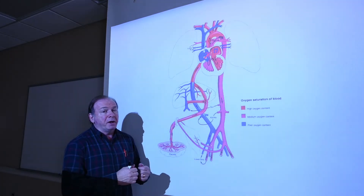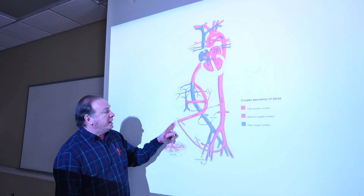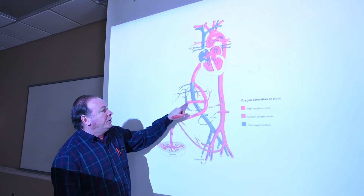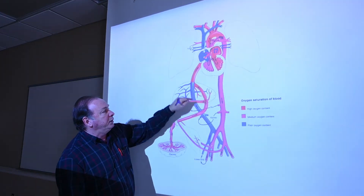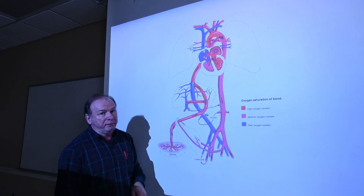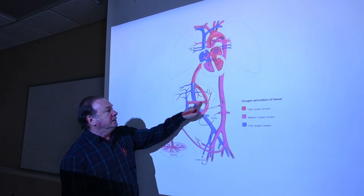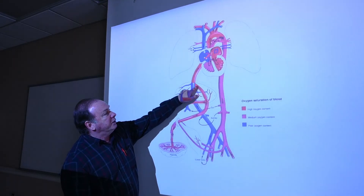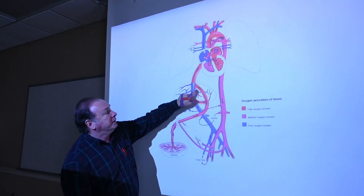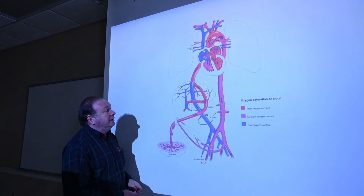Now let's look specifically at where mixing of oxygenated and deoxygenated blood occurs. Fully oxygenated blood from the placenta is routed in two directions and mixes in two places. The first is where the umbilical vein meets the hepatic portal vein. The second is where the ductus venosus — an extension of the umbilical vein — meets the inferior vena cava.